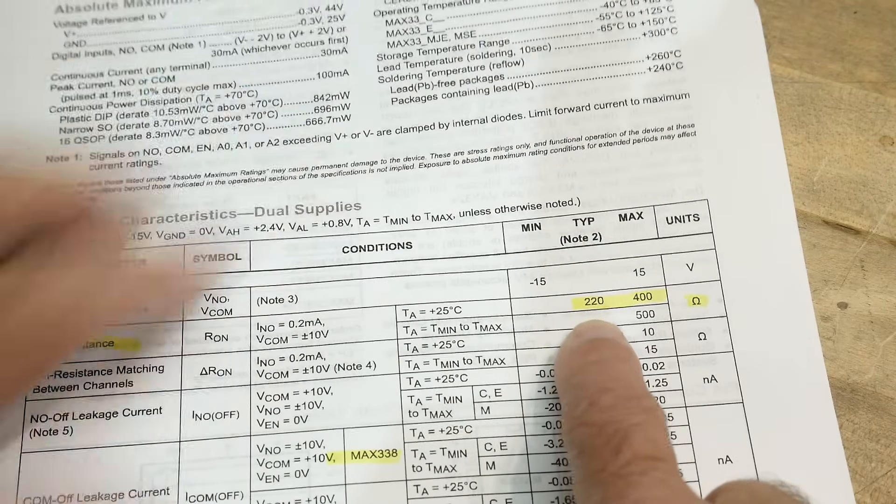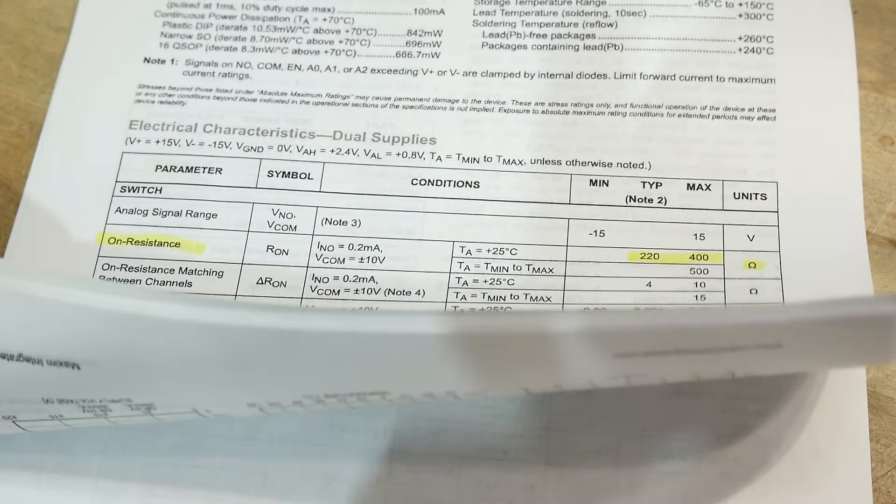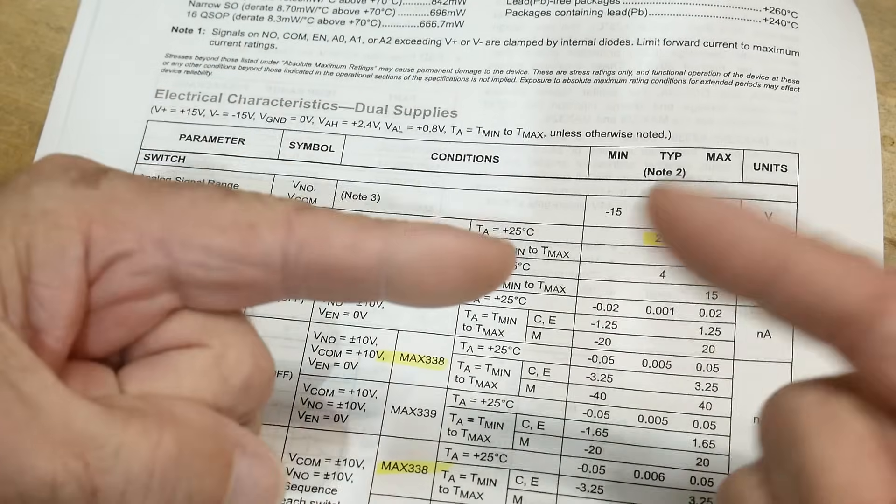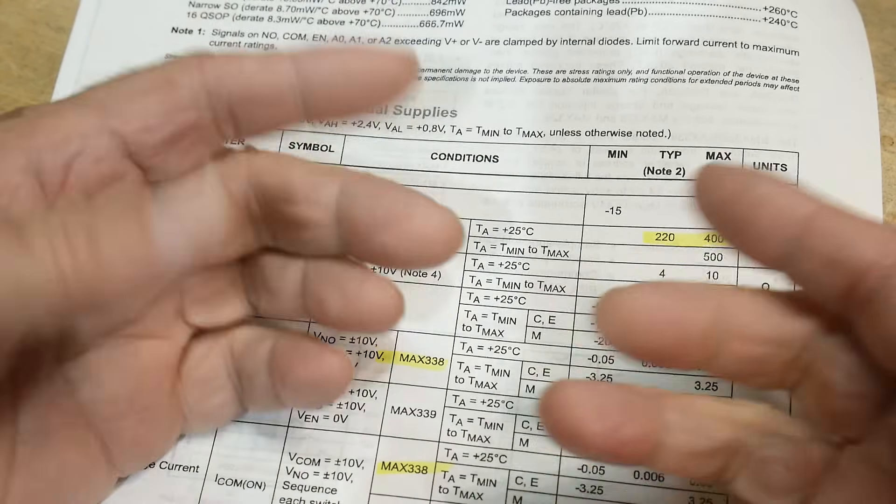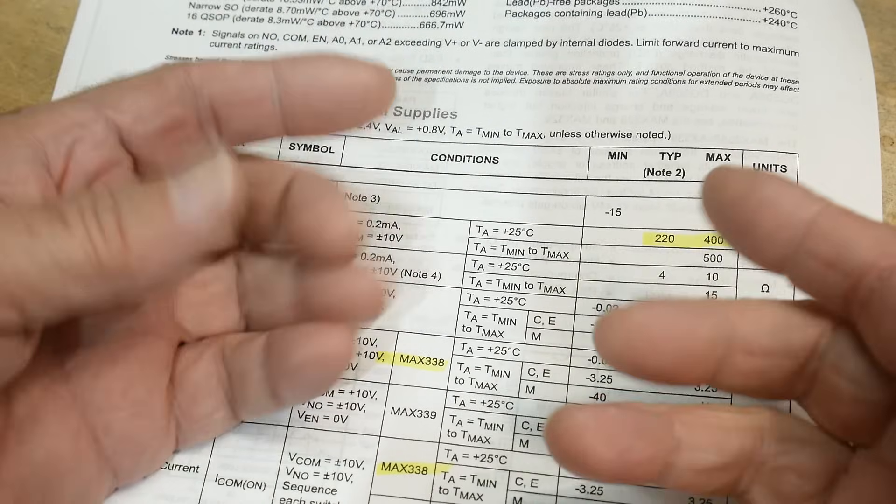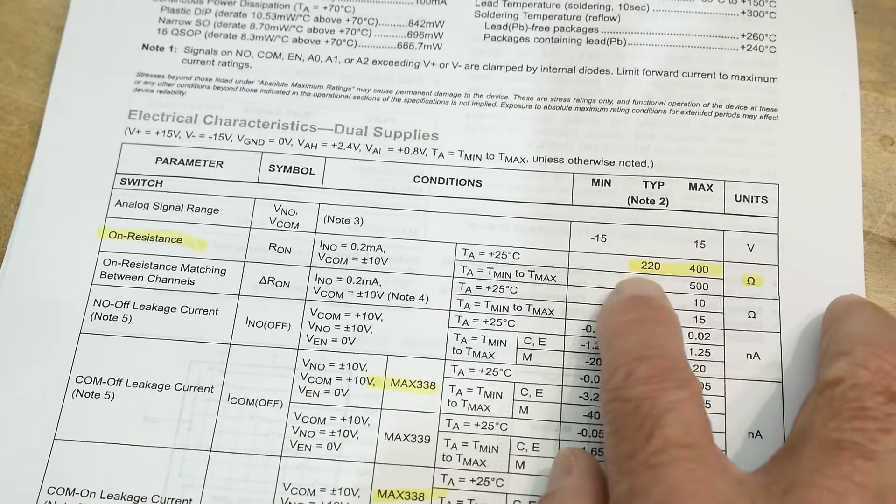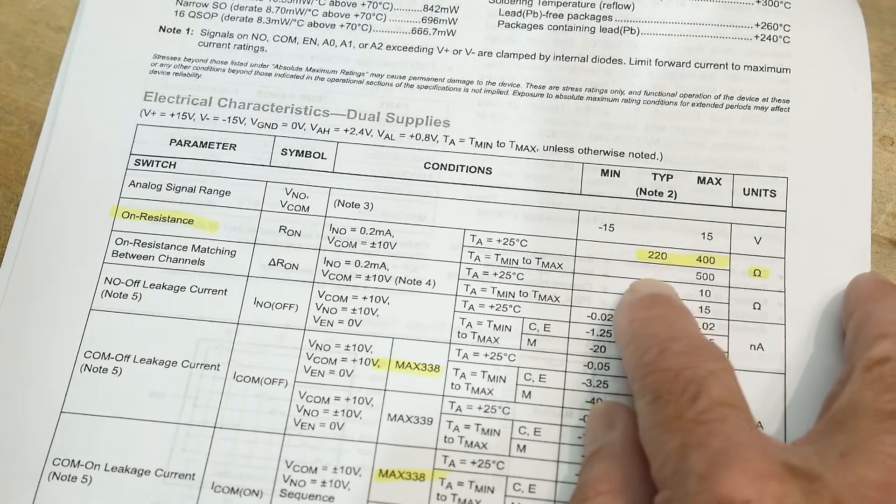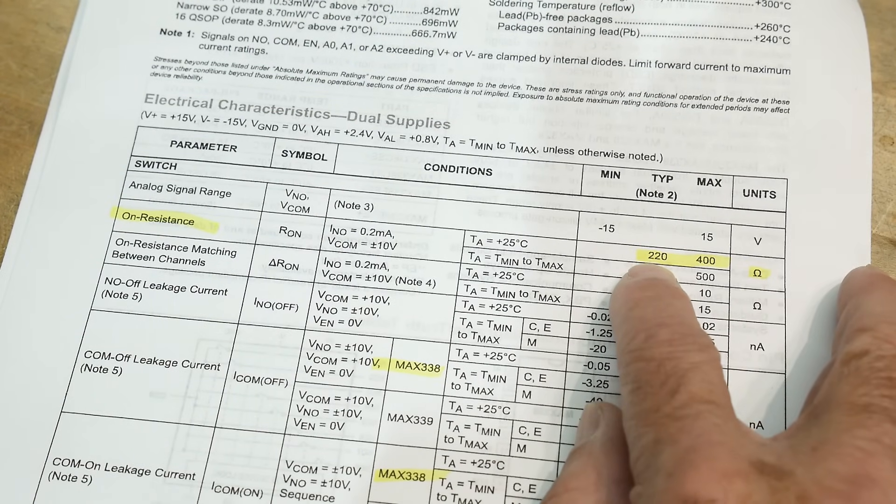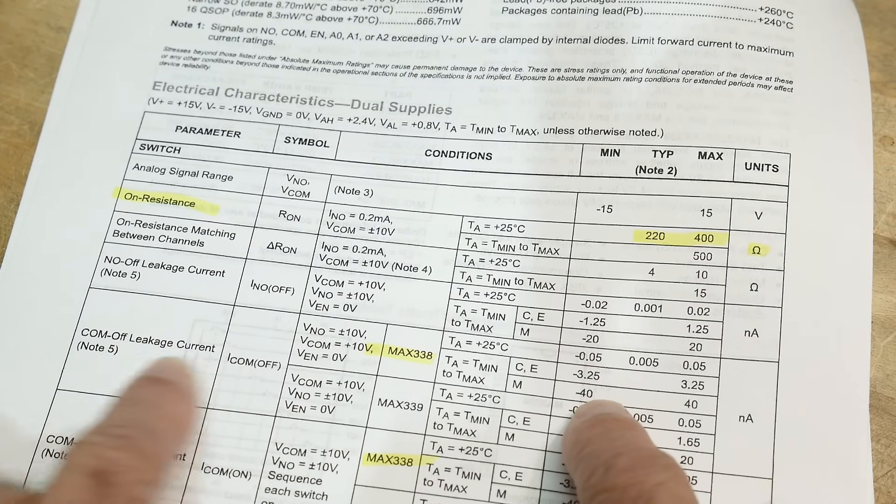So what's the claim to fame of this guy? About 220 ohms of resistance. So that's another thing you need to be aware of. It's not like a relay where you have almost zero ohms, or you think, well, it's a FET, and they're like really low ohm FETs, 0.04 ohm FETs or something. No, these are fairly high resistance. But if you're measuring voltages, you don't care. An extra 200 ohms doesn't matter. So yeah, so these are 220 ohms.